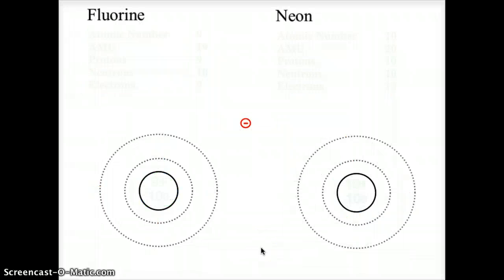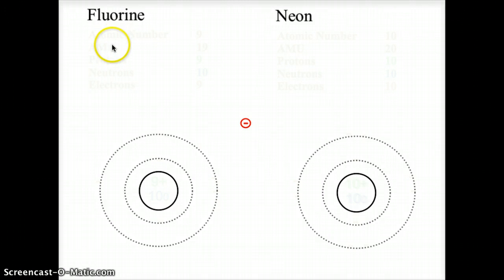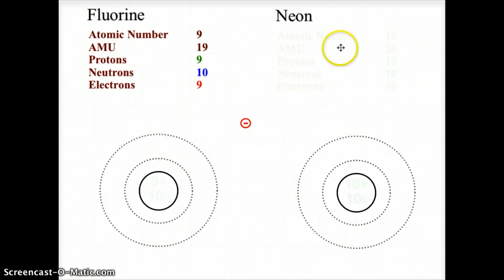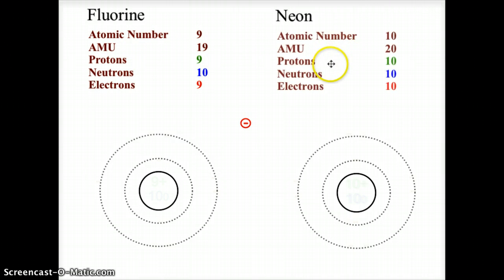Let's jump over to fluorine and neon — numbers 9 and 10 on the periodic table. Getting their data from the periodic table, we'll deal with atomic number 9 and atomic number 10. Go ahead and draw these on a separate sheet of paper, then come back and check how you did. Turn off the video now, and we'll see you in a little bit.